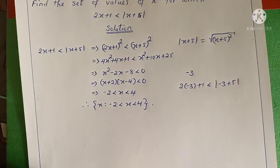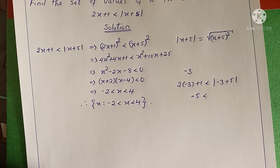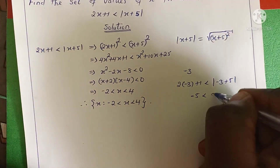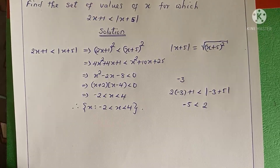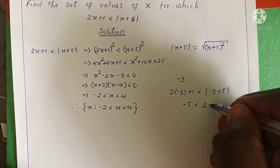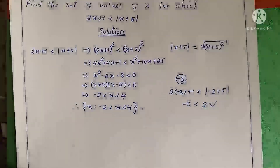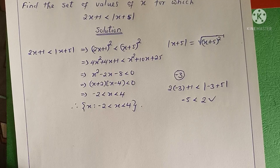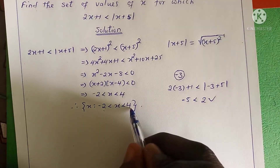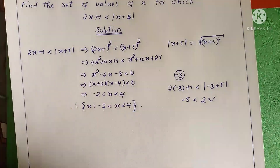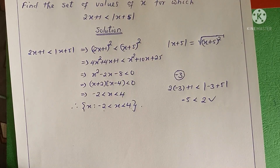2 times -3 is -6, plus 1 is -5, which should be less than |-3 + 5| = |2| = 2. Is -5 less than 2? Of course it is — meaning negative 3 should be part of our solution. But this range starts from -2 and ends at 4, so -3 is not included. Therefore this solution is incomplete.